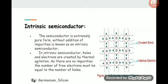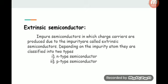Extrinsic semiconductor: Impure semiconductors in which charge carriers are produced due to impurity are called extrinsic semiconductors. Depending on the impurity atom, they are classified into two types: n-type and p-type semiconductor.